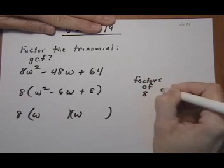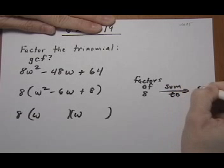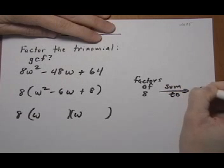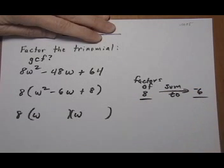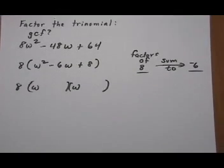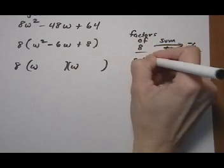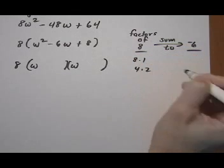Factors of 8 that sum to the middle term of minus 6. So let's list out the factors of 8. We have 8 times 1, and 4 times 2.